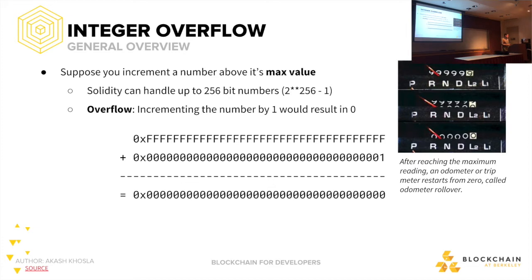When you reach the maximum limit and increment, your integer overflows, wraps around, and becomes zero. Odometers actually work this way — if they reach the maximum reading and go past that, they revert to zero. So maybe if you drive your car enough you can sell it without getting arrested — though people tamper with odometers, which is illegal. There's also integer underflow, which is much more common. When a number is unsigned and you decrement zero, you get the maximum possible value.